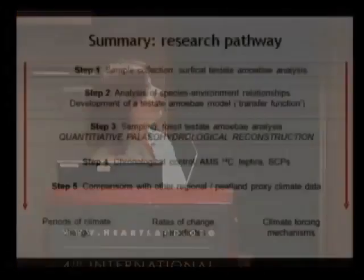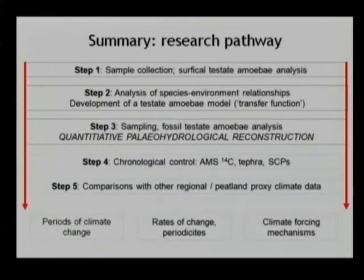To summarize, I've looked at the processes we employ to extract paleoclimate data — from the early stages of sample collection, the development of species-environment relationships, and the subsequent model construction to look at paleohydrological change. I've talked about the importance of establishing a good chronology, and given a flavor of the types of data we're getting from this archive. I've highlighted some periods of climate change from the Irish record. Clearly, the next stage in our scientific research pathway is to start looking at rates of change, scales of change, periodicities of change, and then to try and make that leap to look at forcing mechanisms.